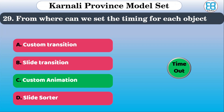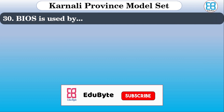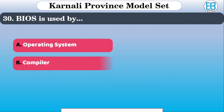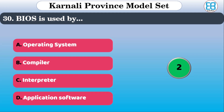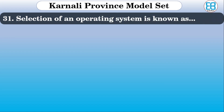BIOS is used by which of the following? The options are: operating system, compiler, interpreter, applications. The correct option is operating system.